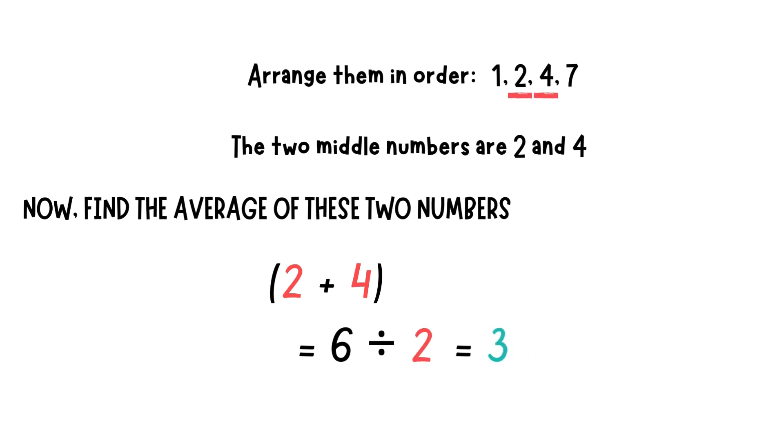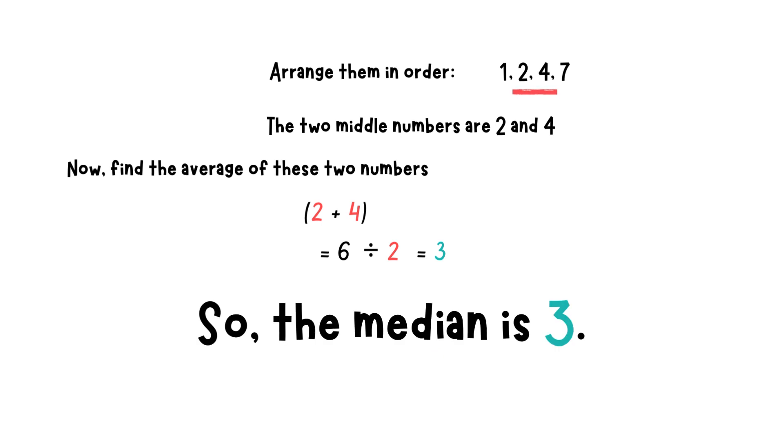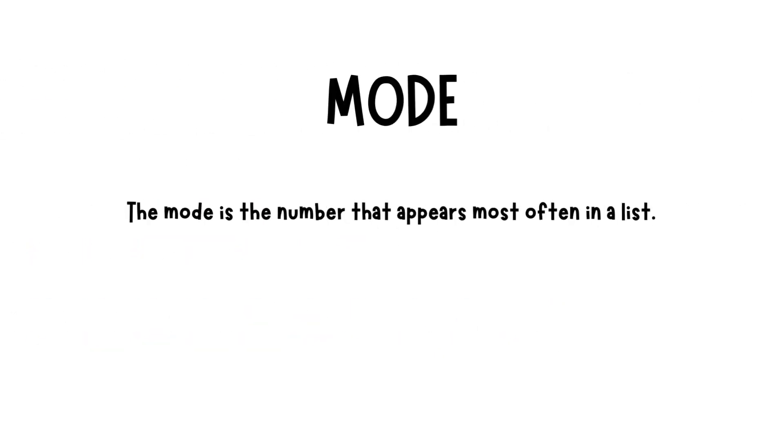6 divided by 2 is 3. The median is 3. Mode. The mode is the number that appears most often in a list.